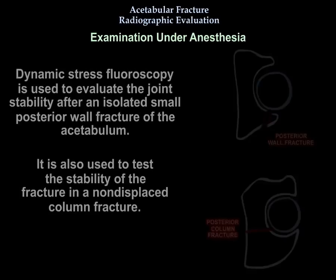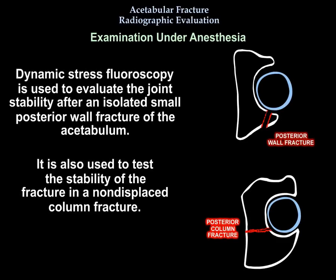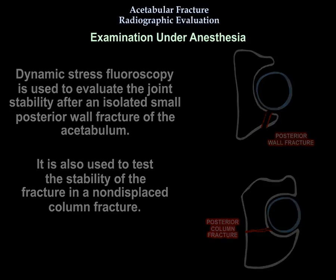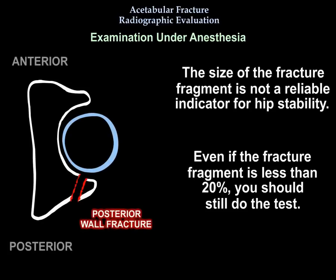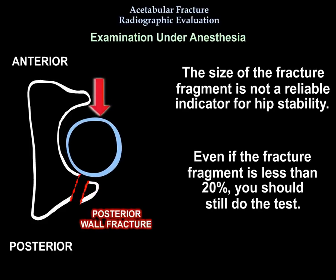Examination under anesthesia using dynamic stress fluoroscopy is used to evaluate joint stability after an isolated small posterior wall fracture or a non-displaced column fracture. If the fragment is more than 50 percent, the hip is definitely unstable. When there is any question about stability, examination under anesthesia should be performed regardless of fragment size, as fragment size is not a reliable indicator of hip stability.